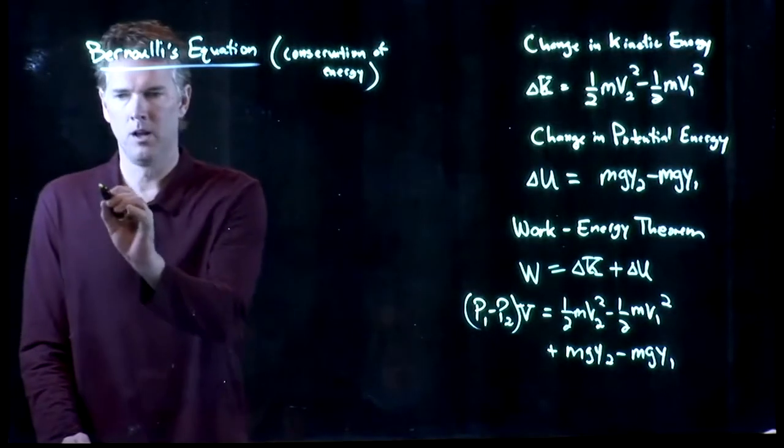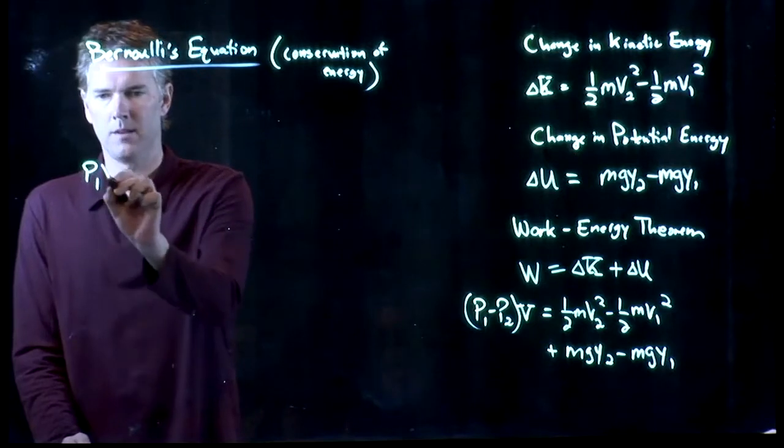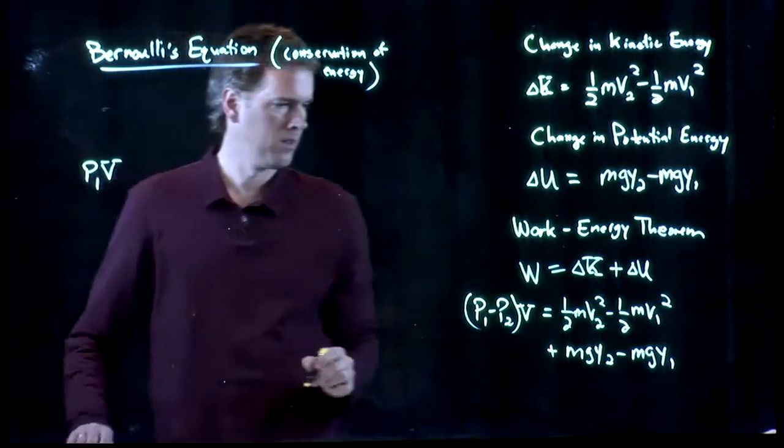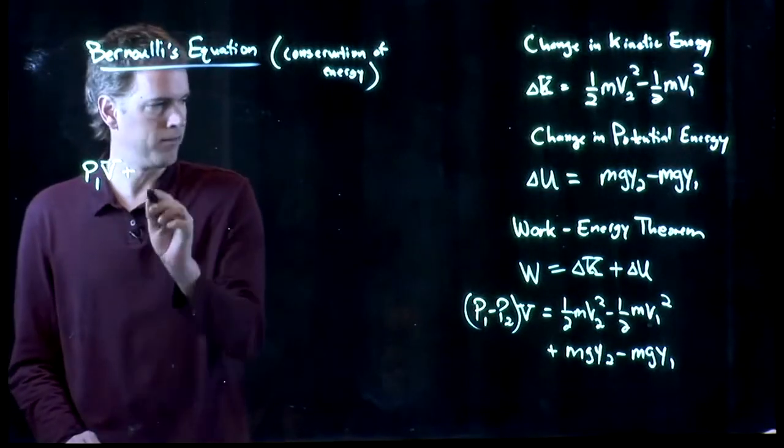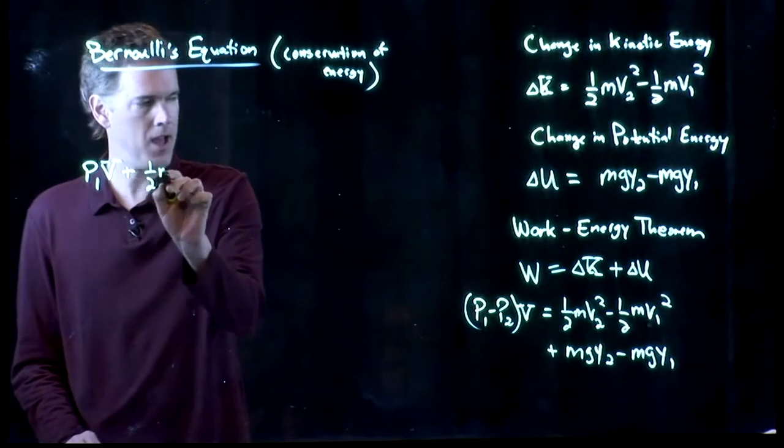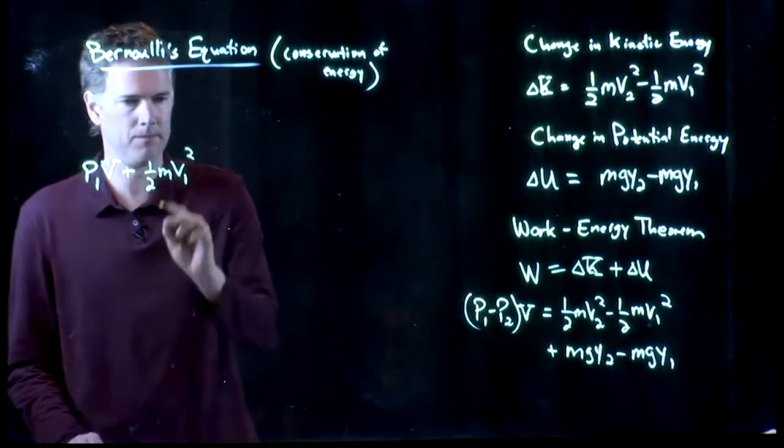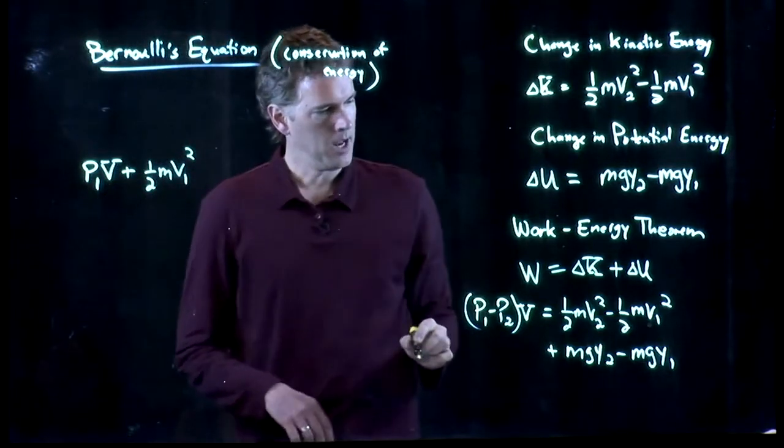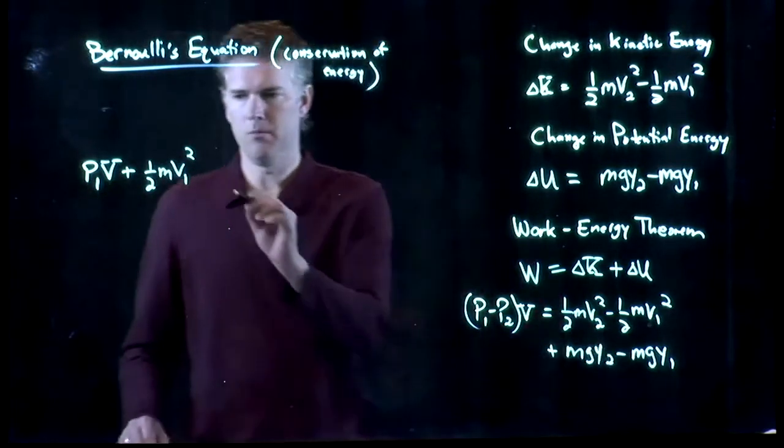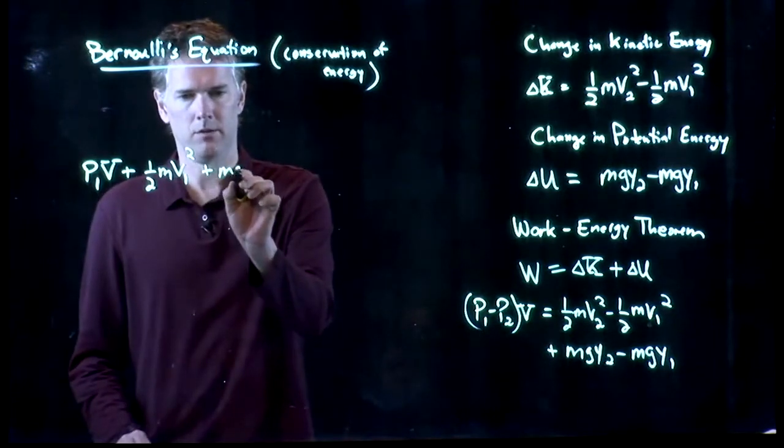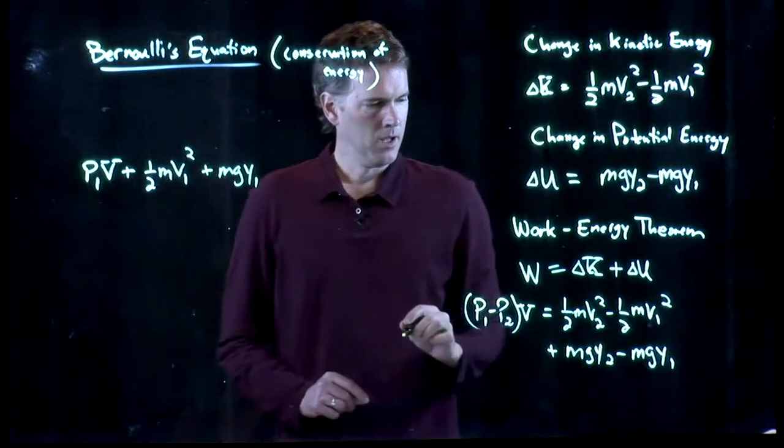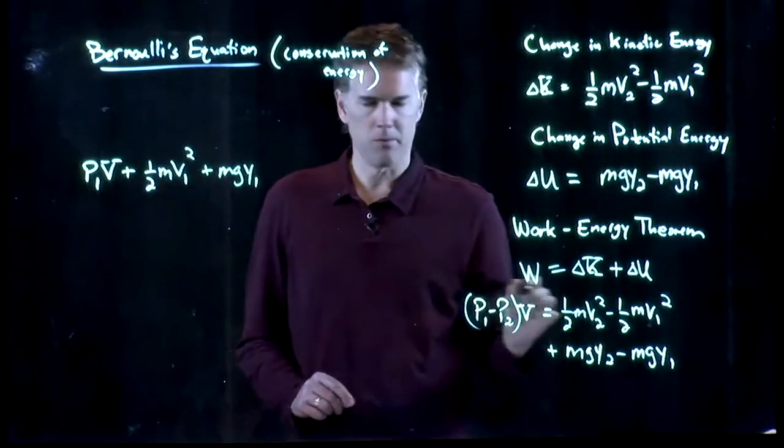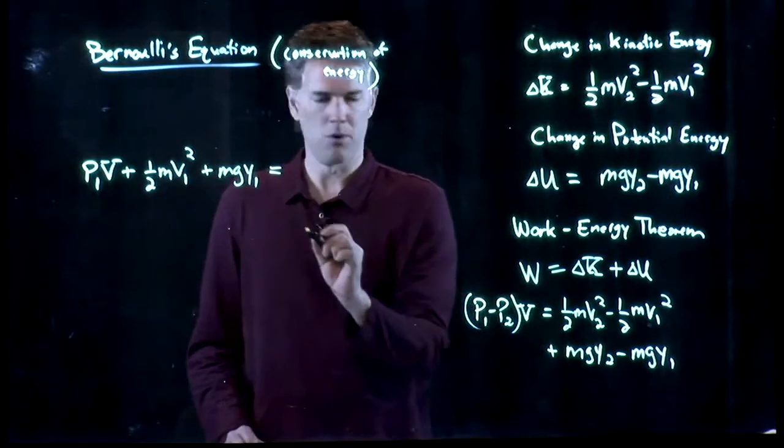Let's separate the terms. We've got P1 times V. I'm going to move this V1 term over to the other side, so we have 1/2 M V1 squared. And now I'm going to move the Y1 term over the left side, so I have M G Y1.